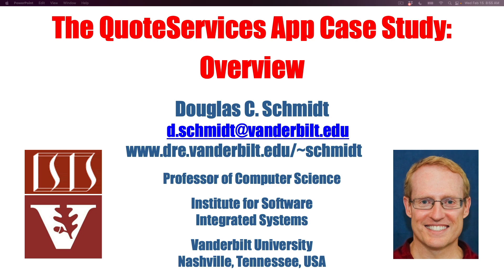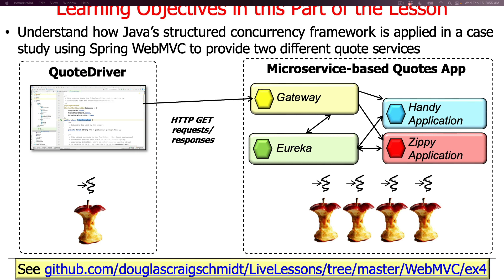We're now going to turn our attention to a new case study that will go well above and beyond what we've covered up to this point and show some really cool new features. This is called the Quotes Services app, and we're going to use a bunch of different concurrency frameworks using Spring WebMVC to provide a couple of different Quotes services. We previously did the Berra Quotes example, which had one microservice with a couple of different implementation strategies, but only one microservice — and that was a bit deficient.